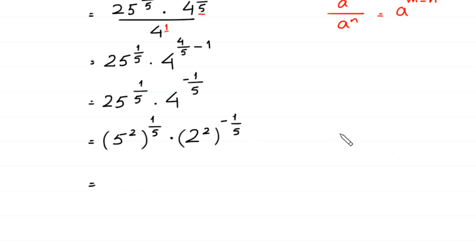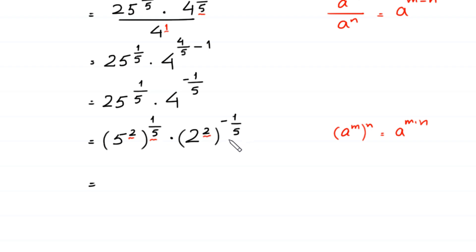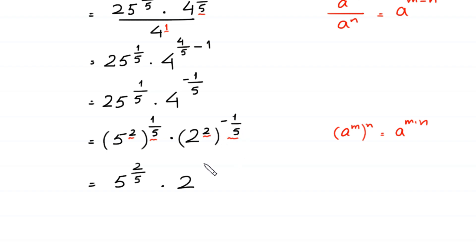According to this property of exponents, a to the power m, whole to the power n equals a to the power m times n. We multiply this power 2 by this power 1 over 5, and this power 2 by this power negative 1 over 5. So this expression becomes 5 to the power 2 over 5, times 2 to the power negative 2 over 5.